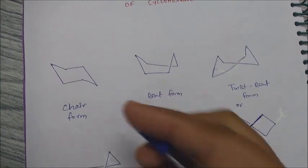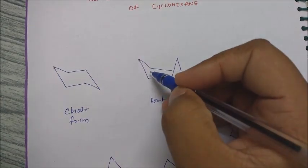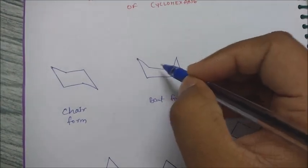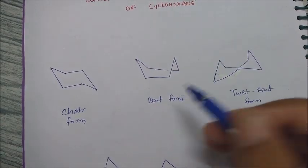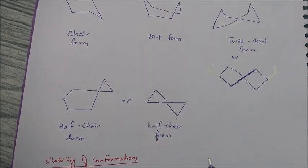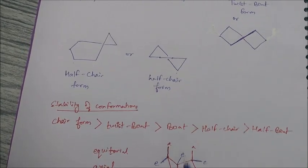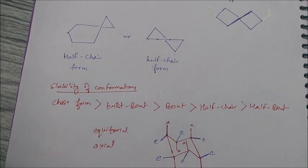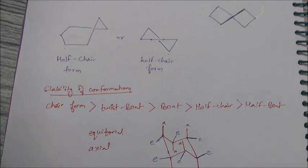For the boat form as well, bonds drawn straight will be axial, and those moving away from the molecule are equatorial. So axial means the bond is straight — moving upward or downward — and equatorial means it moves away in some direction. Now comes the most important thing, which is the key trick you should know to do questions easily. This trick is only applicable for the chair form.